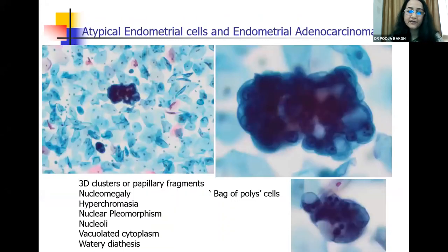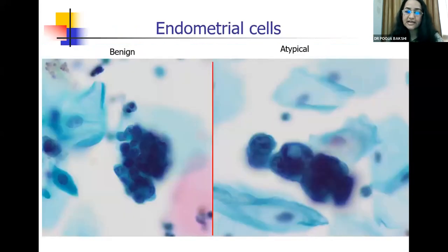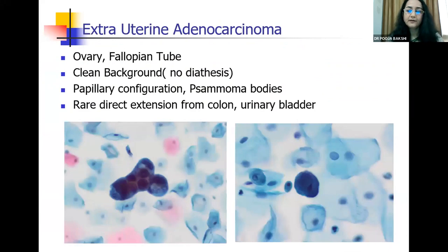Atypical endometrial cells look like slightly larger fragments — still 3D clusters or papillary fragments — but the nuclei are enlarged, there is prominent nucleoli, vacuolated cytoplasm, and a bag of polymorphs — lots of neutrophils within the group of tumor cells. There is obvious hyperchromasia, pleomorphism, vacuolated cytoplasm, and you may even see a watery diathesis in the background. Comparing, on the left side are the benign and on the right side are the atypical endometrial cells. Not only uterine — sometimes ovarian and fallopian tube tumors can also shed cells into the pap smear. Classically the background will be clean with no diathesis, and you may see papillary configuration or 3D clusters of tumor cells, and even psammoma bodies may be seen sometimes.